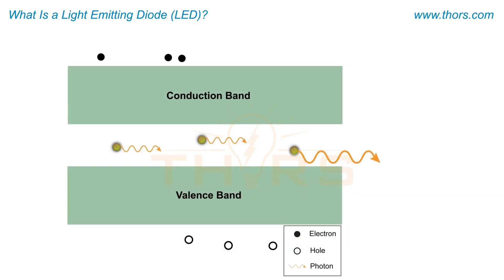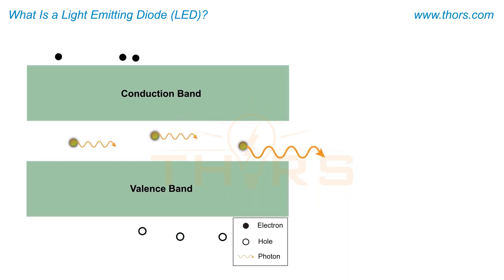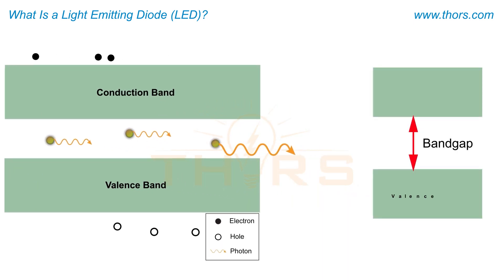The wavelength of the photon released is dependent on the band gap, which is the distance between the valence band and conduction band of the materials used in the active region.